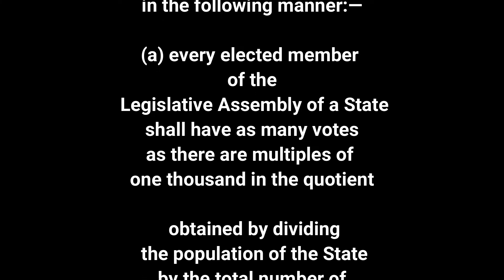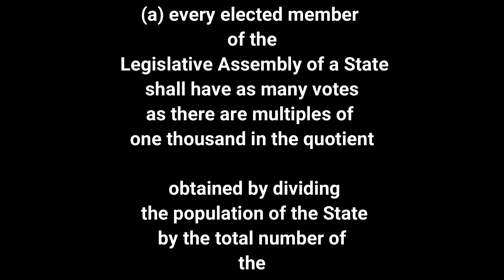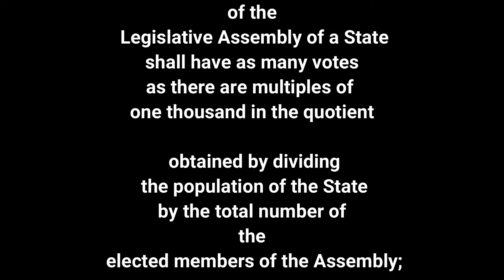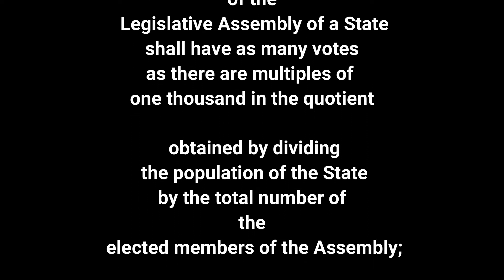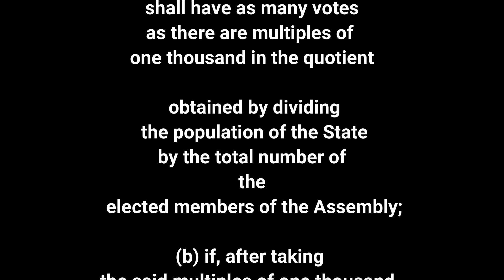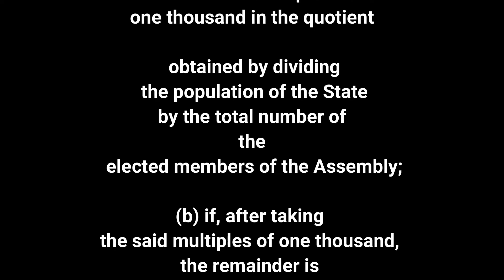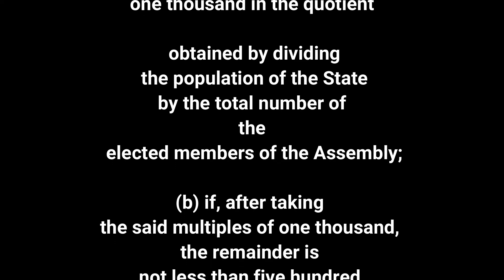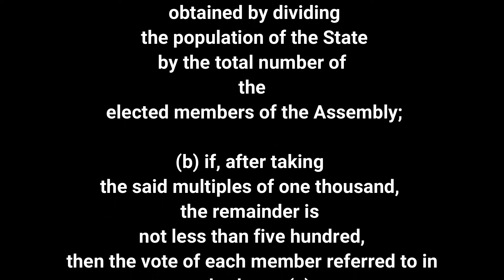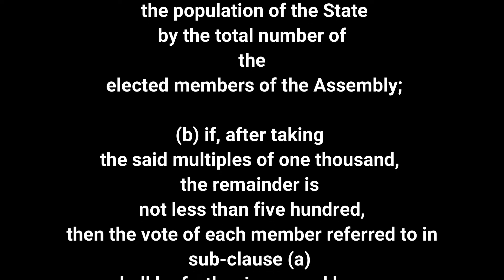Sub-clause a: Every elected member of the Legislative Assembly of a state shall have as many votes as there are multiples of 1,000 in the quotient obtained by dividing the population of the state by the total number of the elected members of the Assembly.